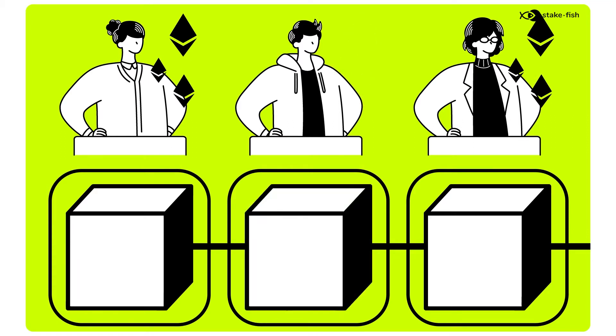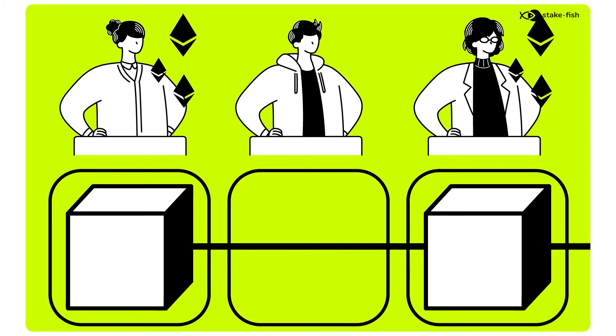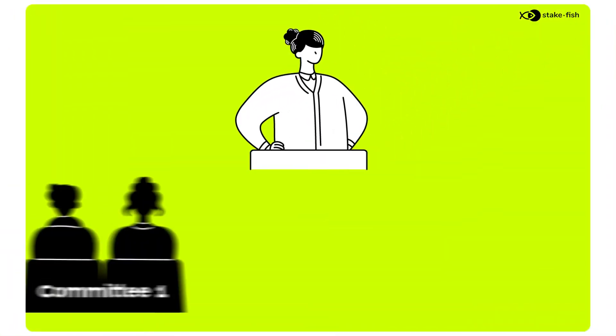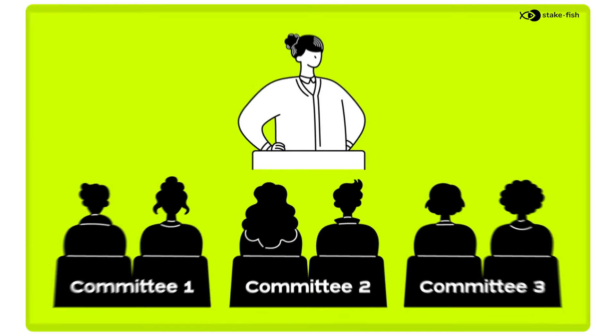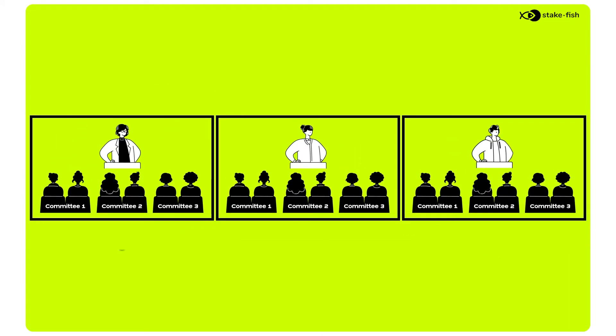In this case, the system will proceed without a block for that slot. Other validators are sorted into committees and will submit attestations once every epoch.